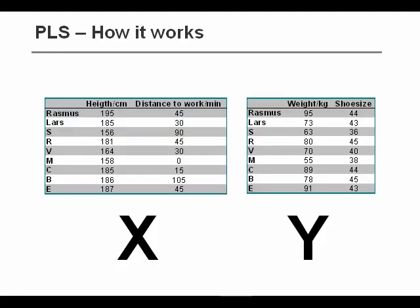Let's take an example to make it more specific. Here's an example of a very small dataset. We have an X block, two variables, height and distance to work. And from those values, we want to predict two Y values, the weight and the shoe size.